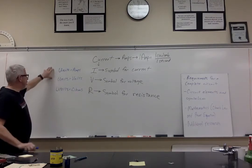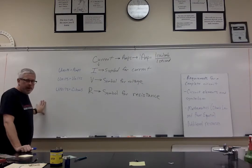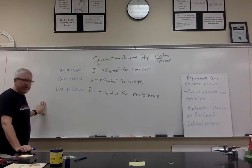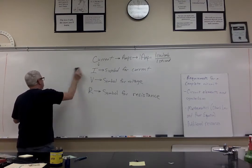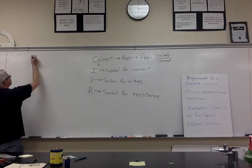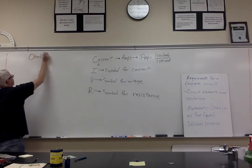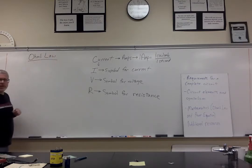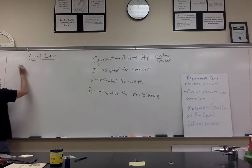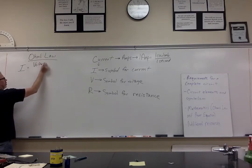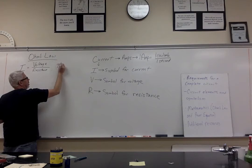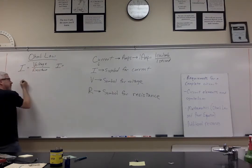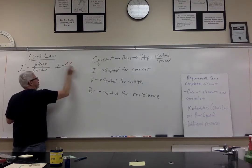So those are the primary things we're going to be thinking about. We'll also talk about power a little bit, which is the rate at which energy flows. Now I'm going to get into the equations. Ohm's law is the primary equation we're going to use for solving things in circuits. Ohm's law is a ratio of voltage over resistance. So I is equal to delta V over R.